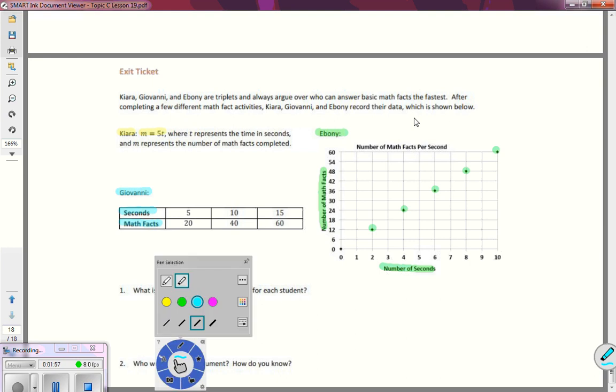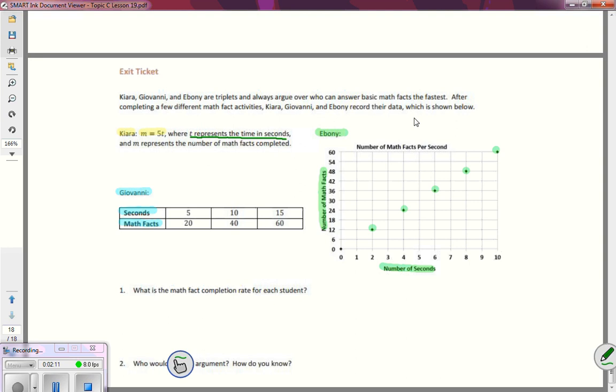So if I want to find out how many math facts Chiara can do per second, what I'm interested in doing then is finding a T where T represents a time in seconds, I want my T to be equal to one. So using her equation, M, her math facts...